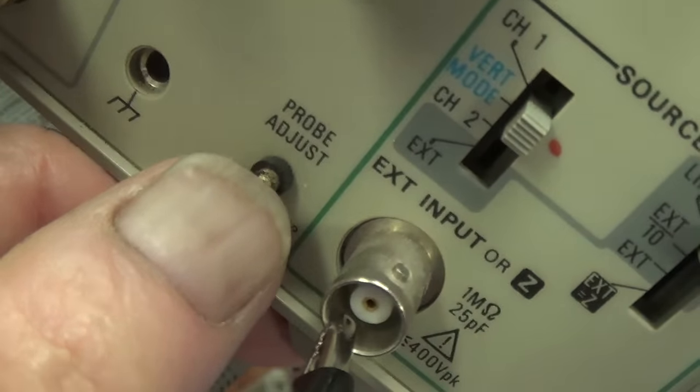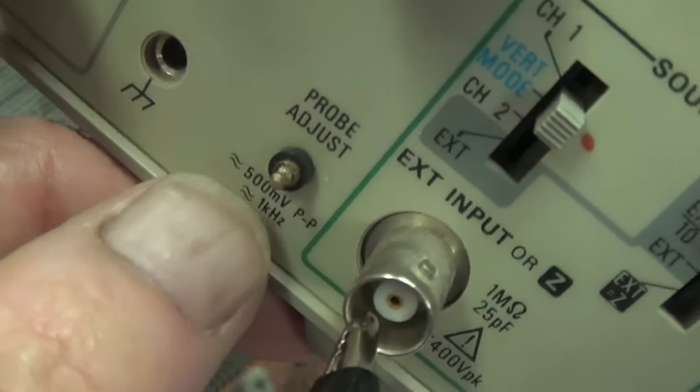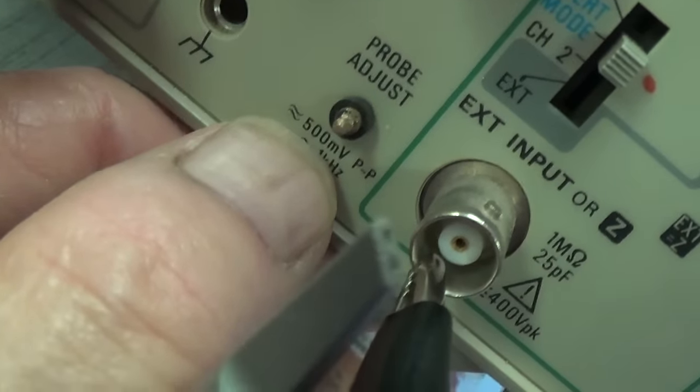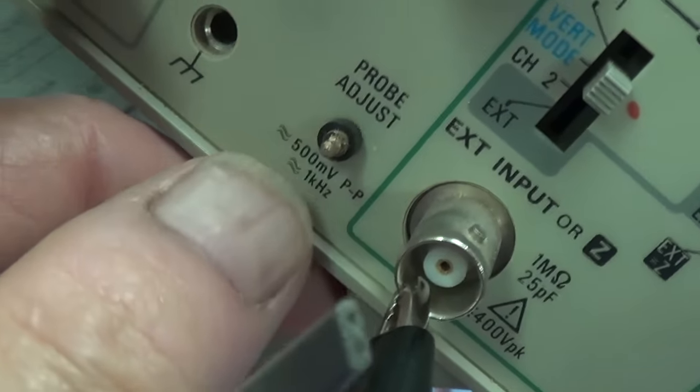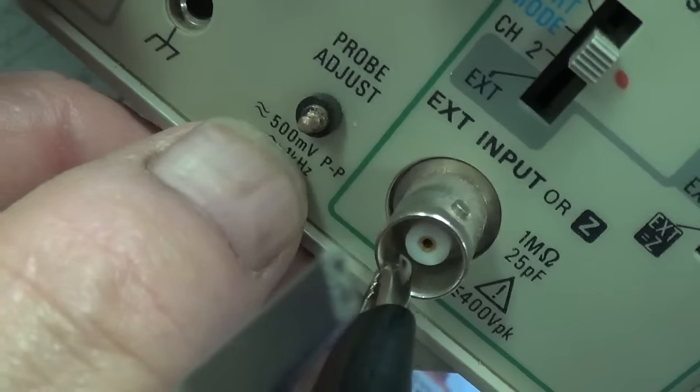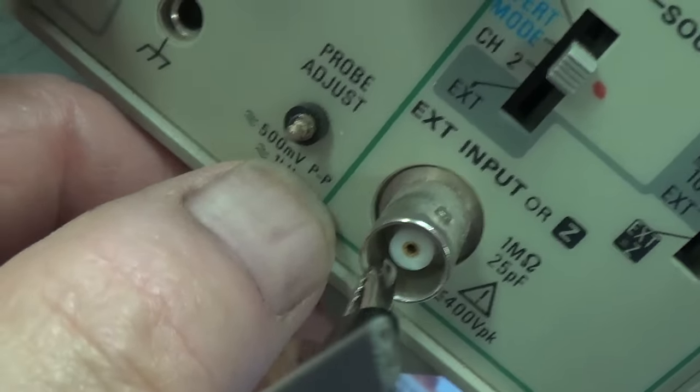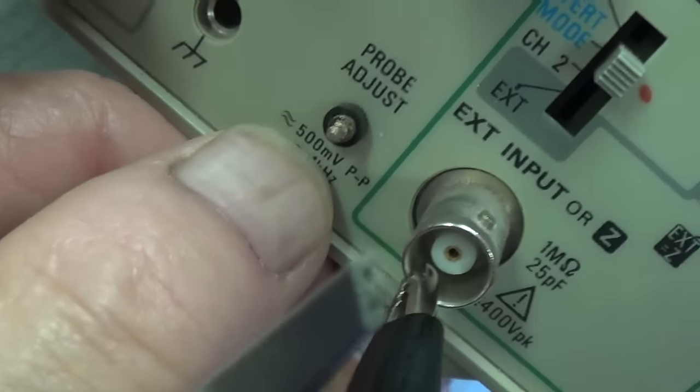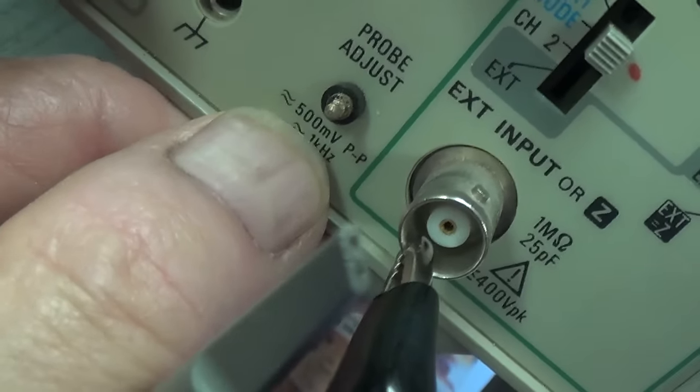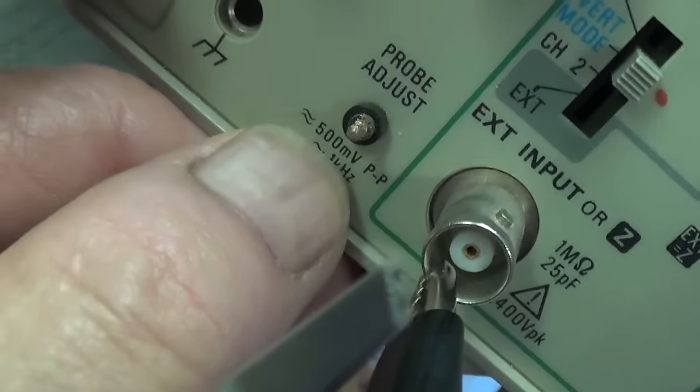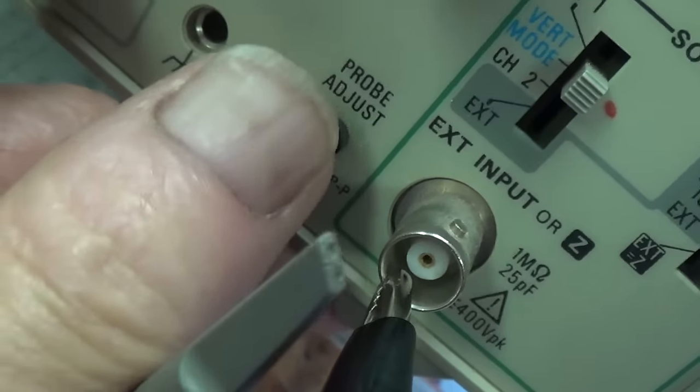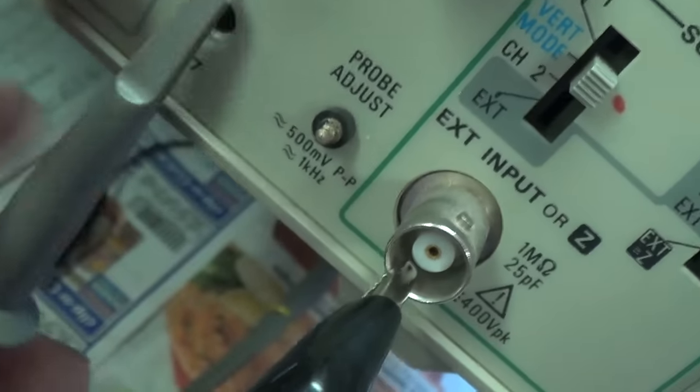Okay, I came over here and I removed my probe from the probe adjust to look at what the heck this is putting out. And it says 500 millivolts. Okay, peak to peak. Well, 500 millivolts is a fancy way of saying what? A half a volt. Okay, so that's what is being put out from my probe adjust. Let me put my probe back on that lug.